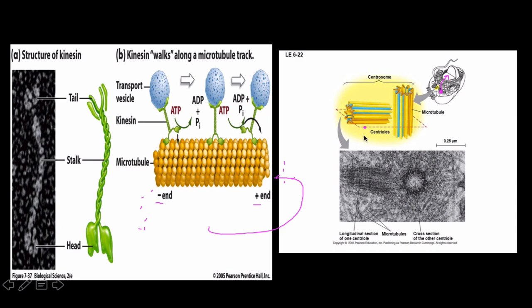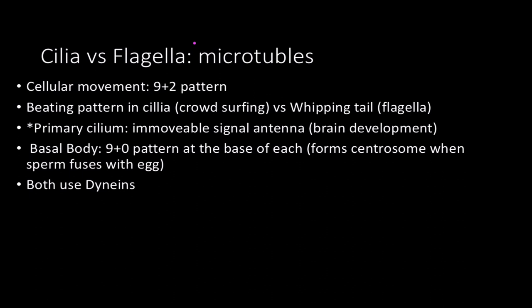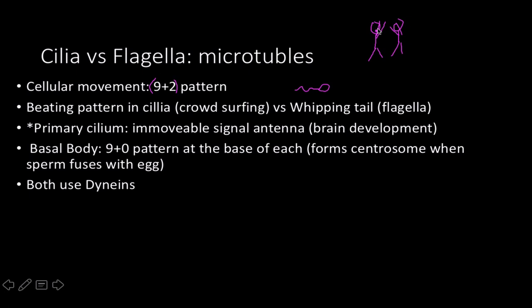Tubulin proteins are stored in something called the centrosome, which is made up of centrioles, and centrioles are made up of microtubules. For extracellular movement, cilia and flagella both use a nine-by-two microtubule pattern. Cilia use what I call crowd surfing — a beating pattern that carries things from one point to the next — like in the trachea or fallopian tubes. Flagella are the classical whipping tail that propels cells like sperm forward. At the base of both cilia and flagella is a basal body with a nine-by-zero pattern of microtubules, structurally very similar to the centrosome. When a sperm fuses with an egg, it donates the centrosome, which starts the process of cell division.